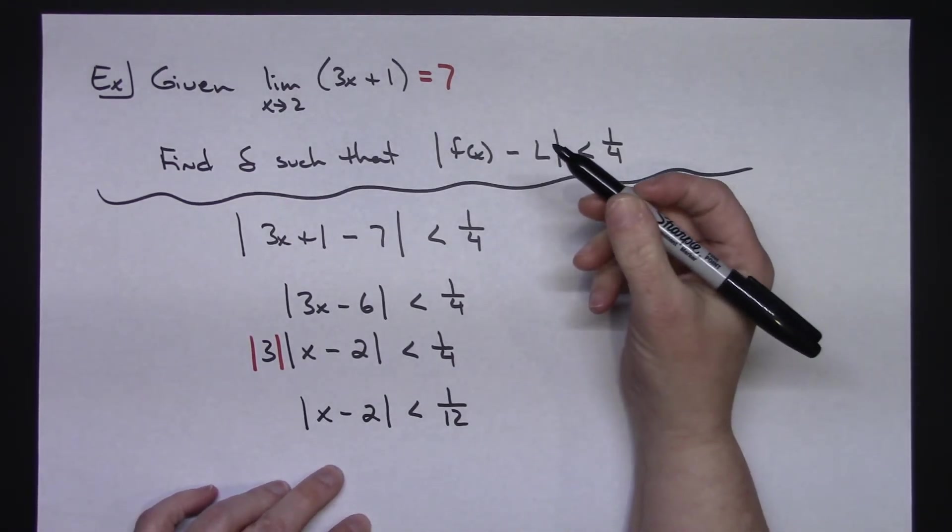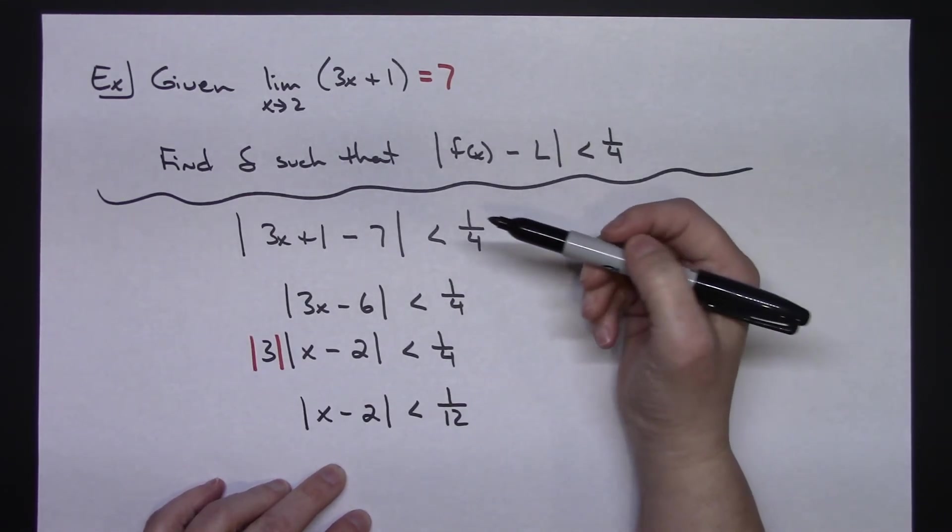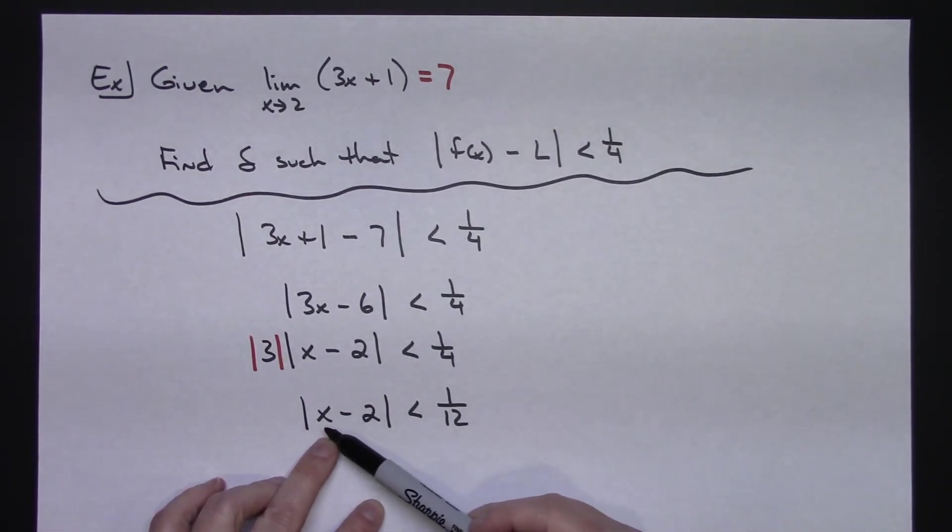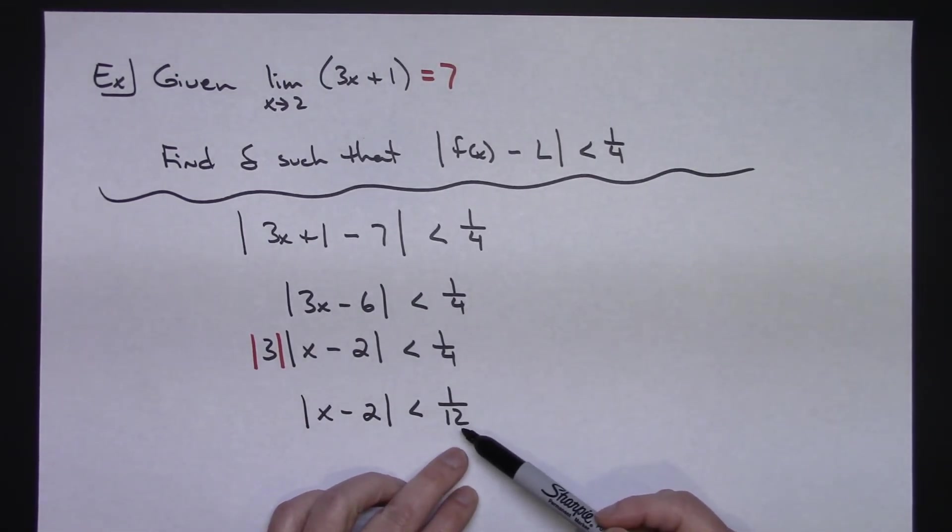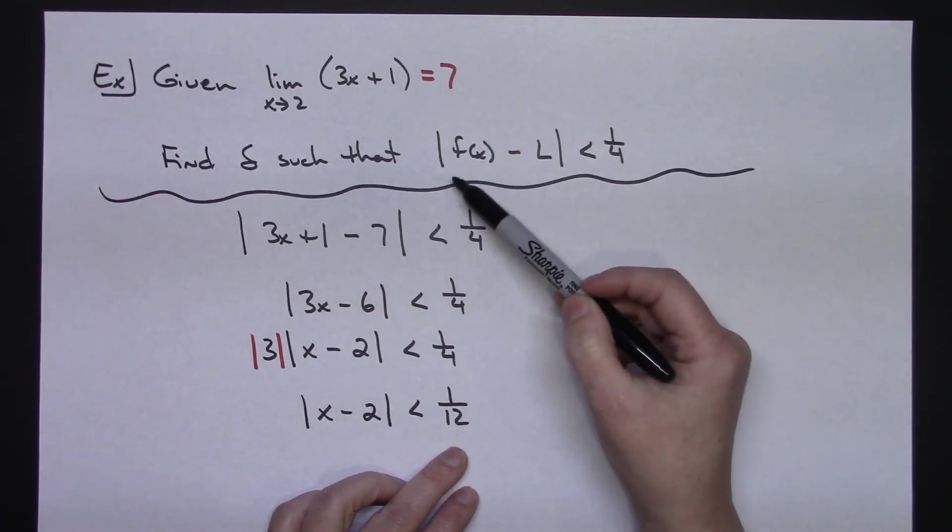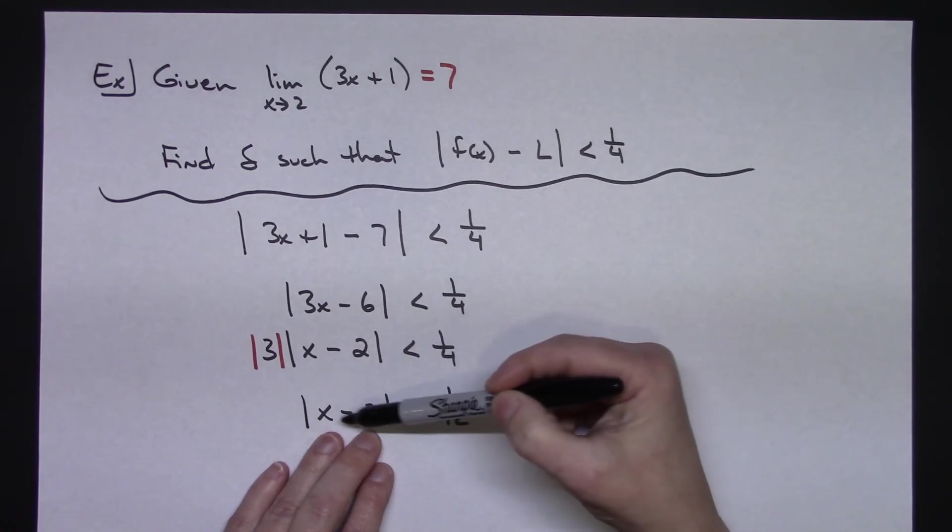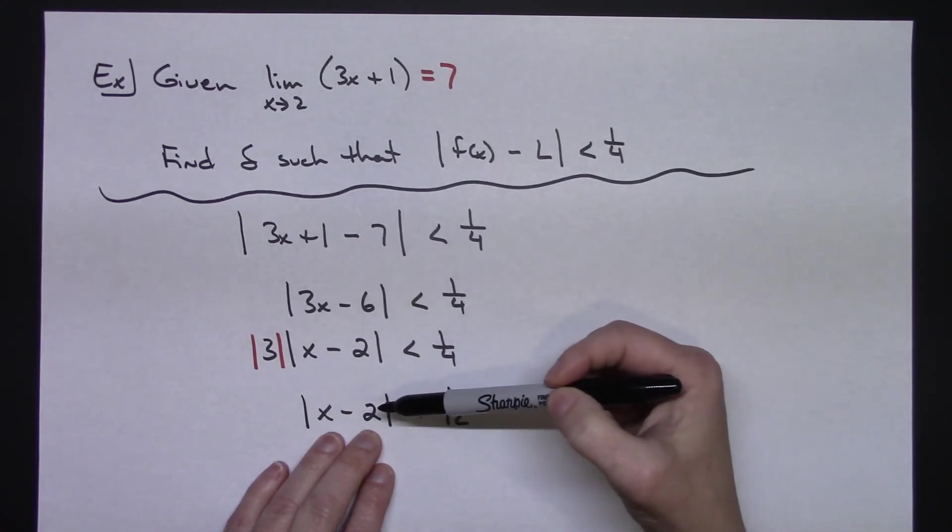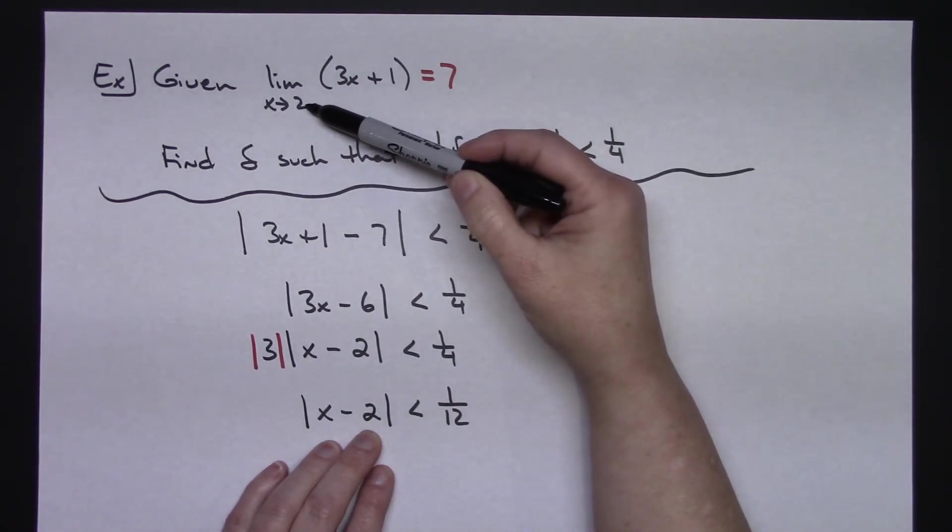Now, recalling our formal definition there of that, the epsilon-delta definition of a limit, the left-hand part of that said that if the absolute value of x minus a fell in between zero and delta, then this was true. The absolute value of the function minus the limit is less than 1 fourth. Well, checking this, if I have done this correctly, and I have factored and solved this correctly, then this should be my value of a. My value of a is what my limit is approaching there.